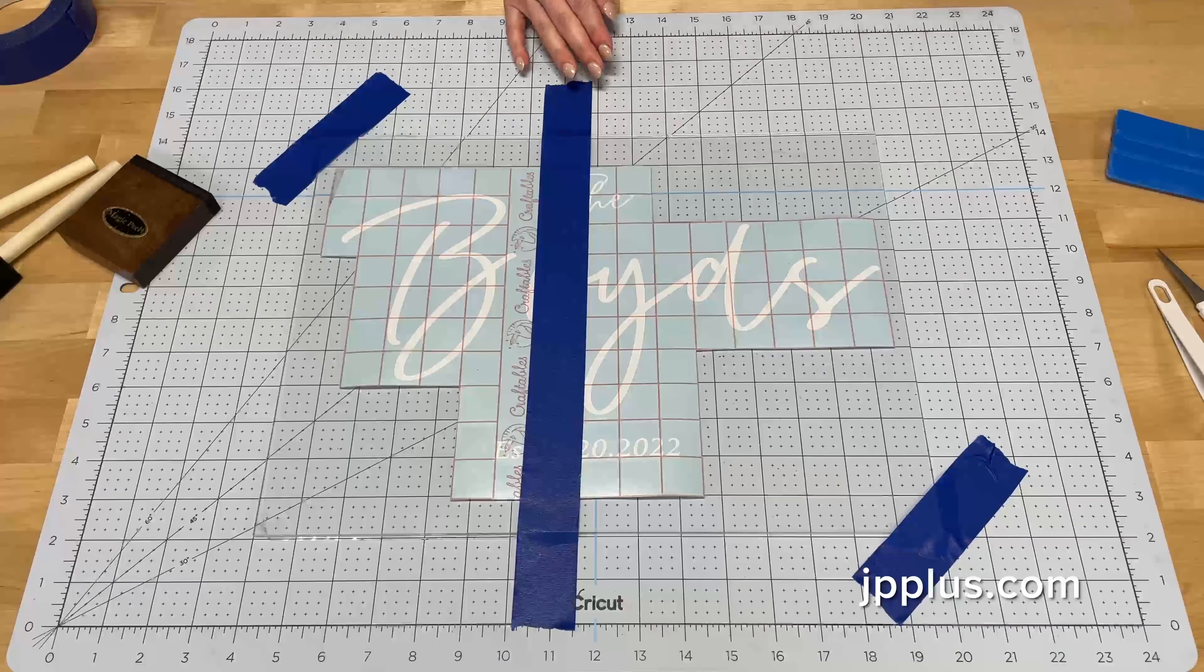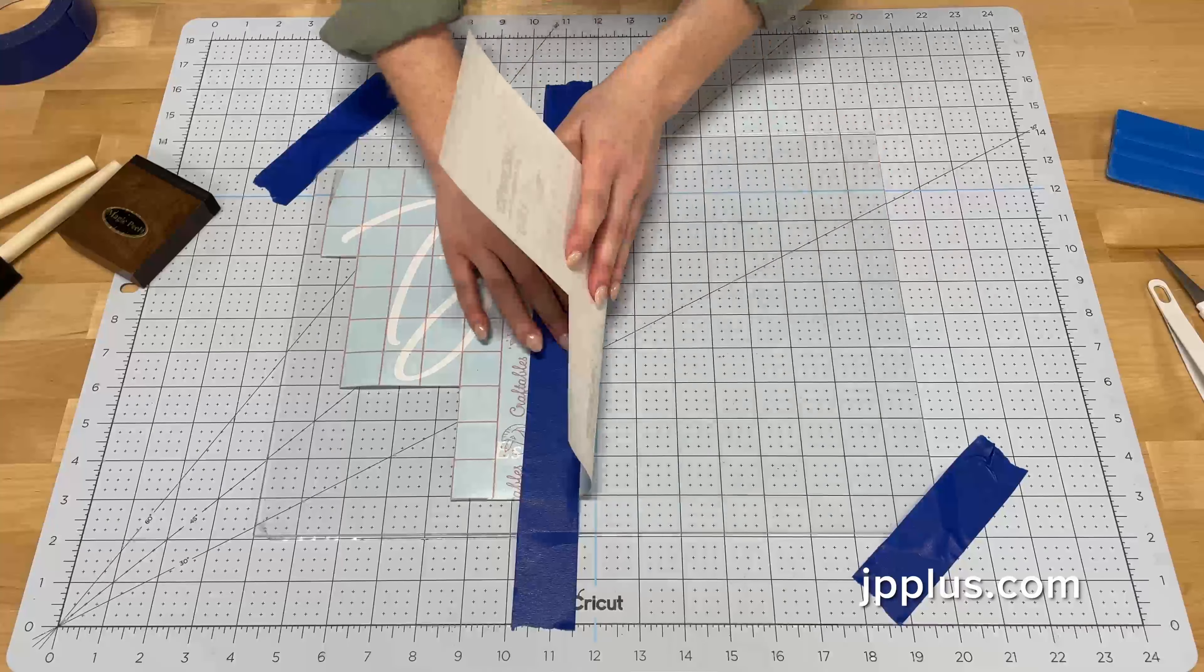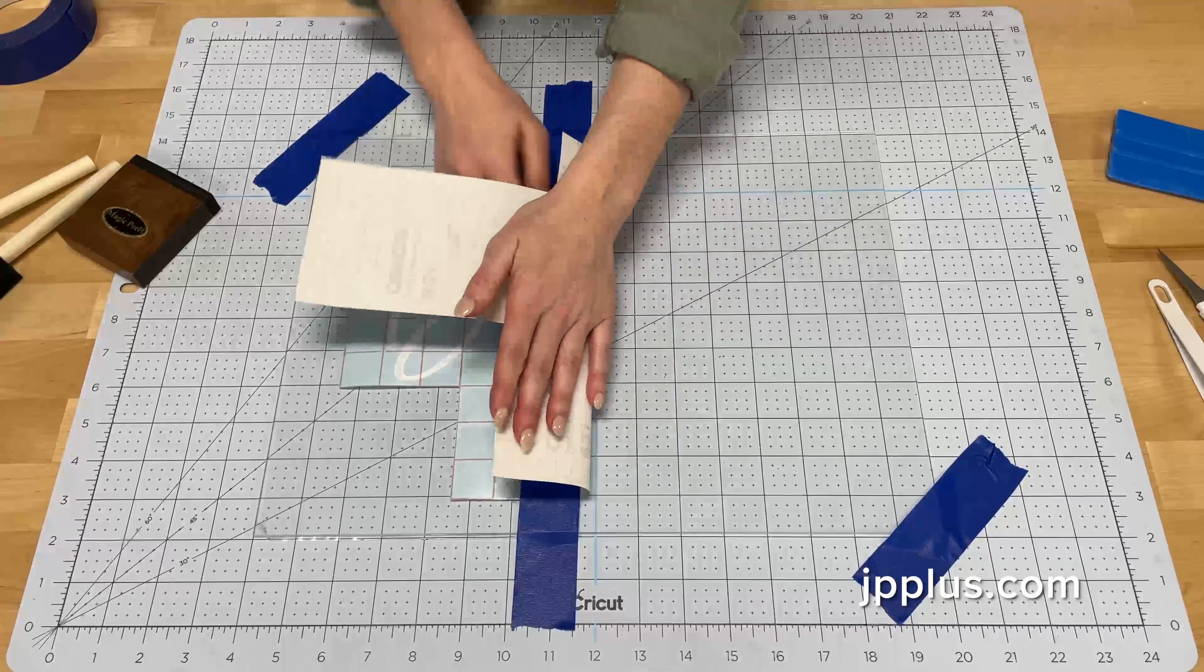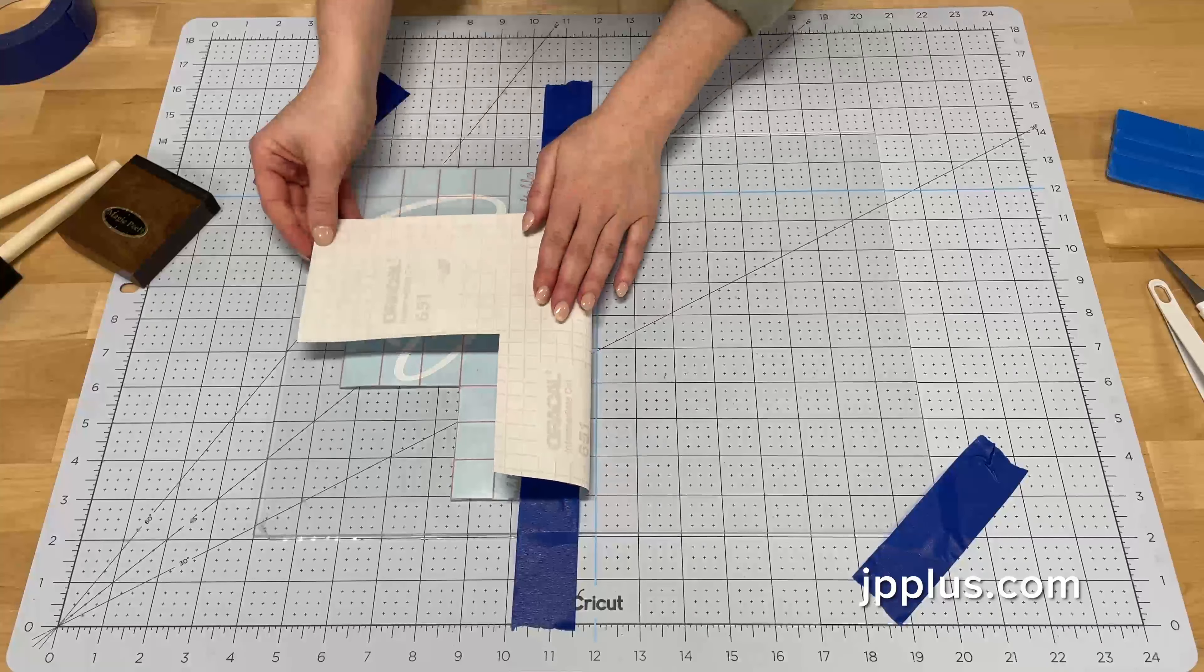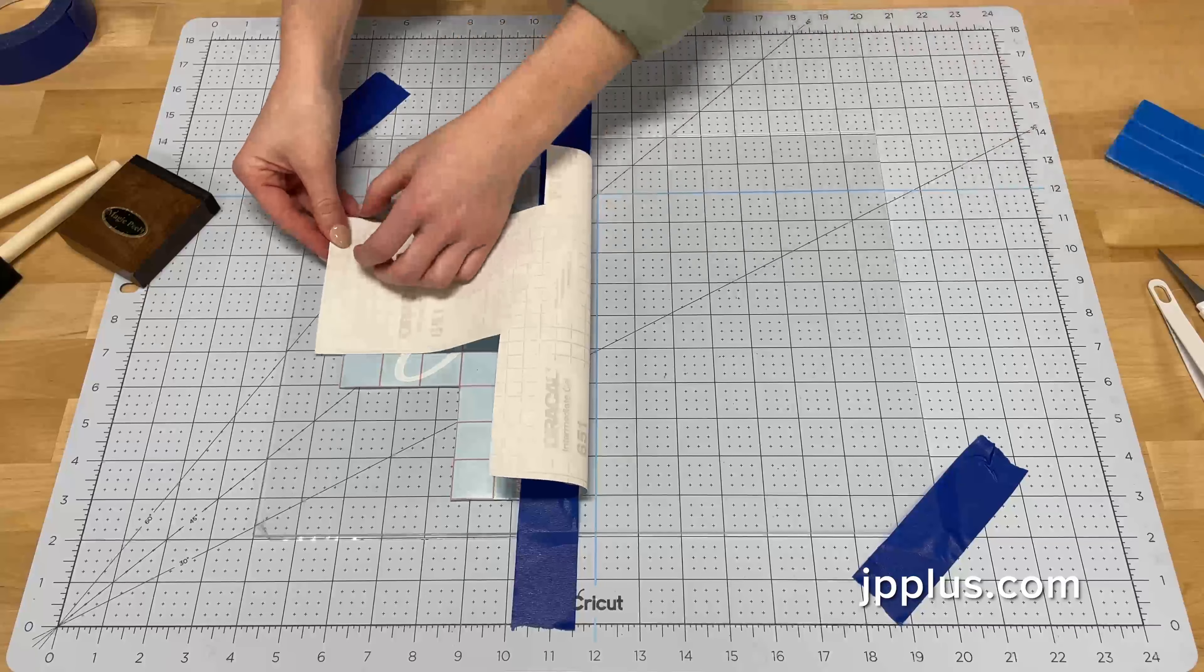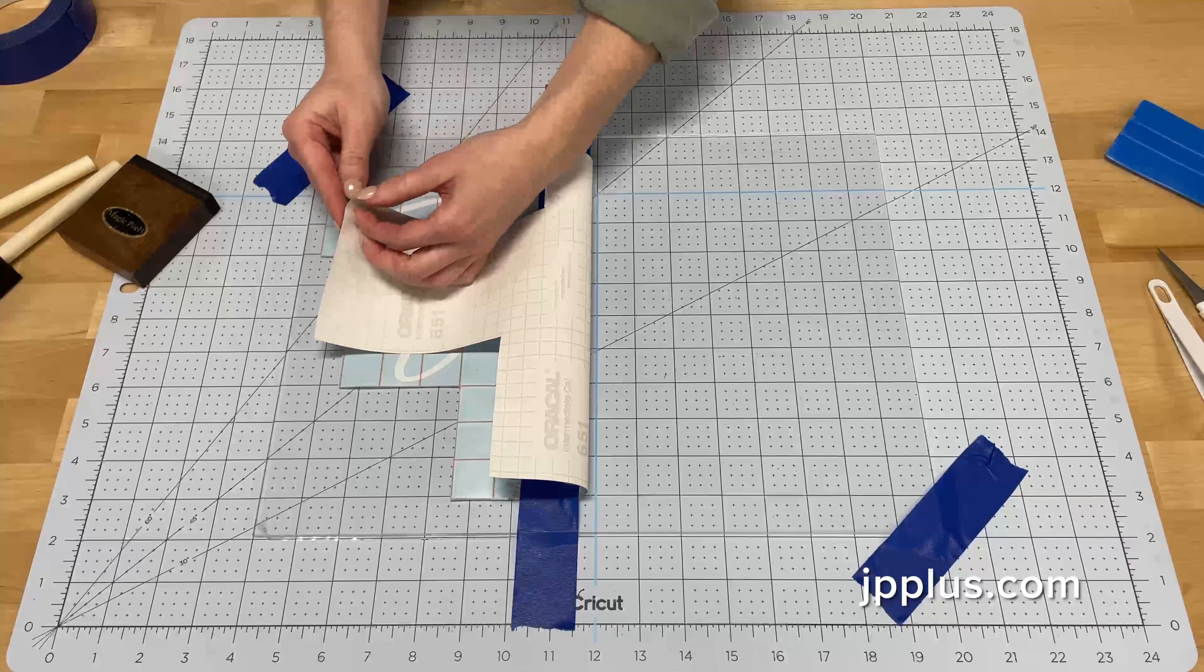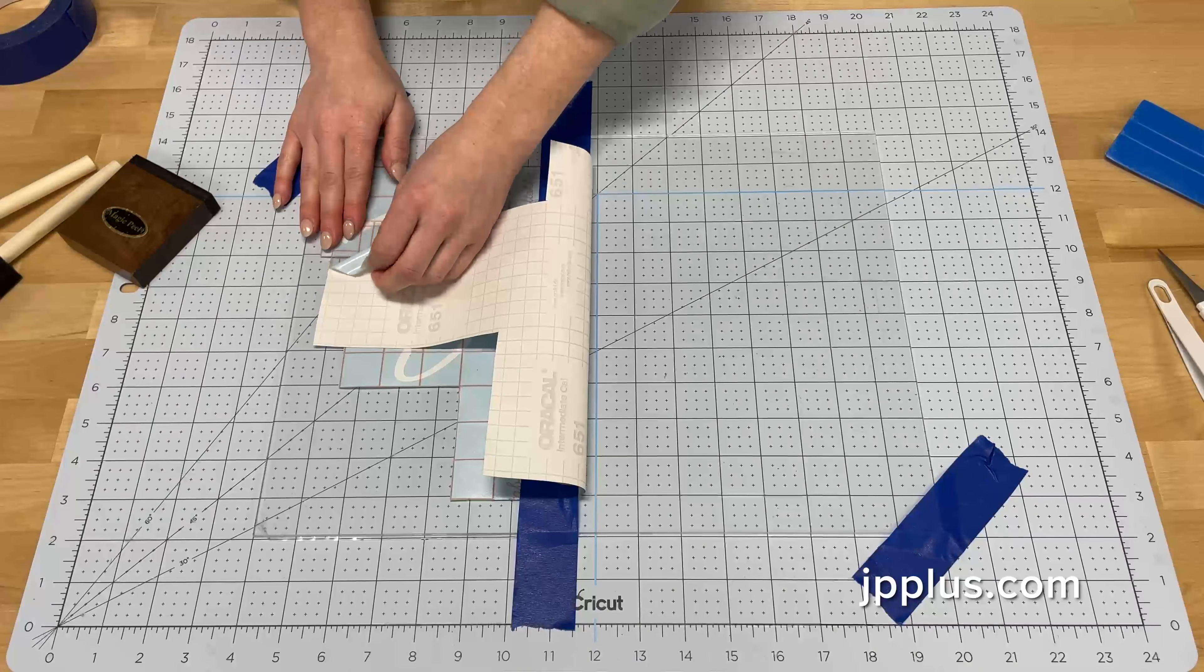We're going to use the hinge method to apply our vinyl to our clear acrylic sign. And to do that, we're going to fold over our vinyl transfer just a little bit but not denting it in and start peeling back our paper to reveal the vinyl on the transfer tape.